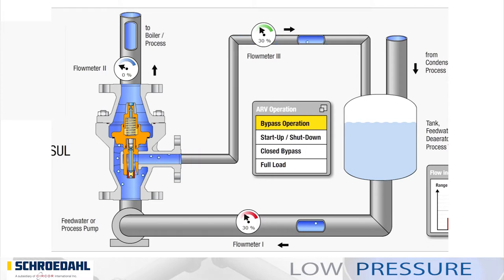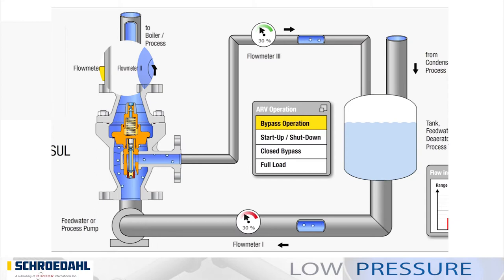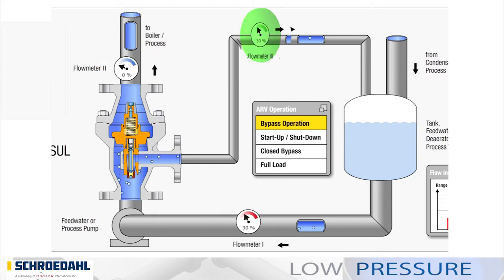Three flow meters are used as a guide to the volume flow ratios. Flow meter 1, marked by red, indicates the percentage of the maximum flow rate applied to the pump. Flow meter 2, in blue, represents the percentage of the maximum flow rate that is fed to the process. And flow meter 3, in green, shows the volume returned to the tank.